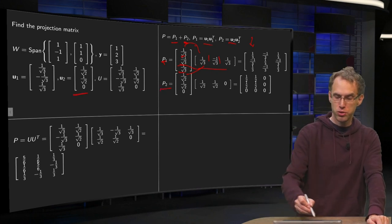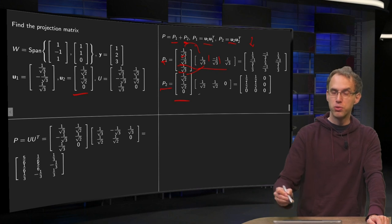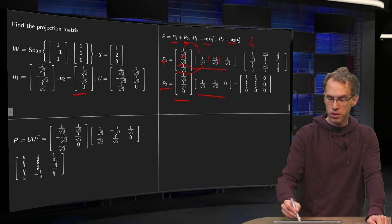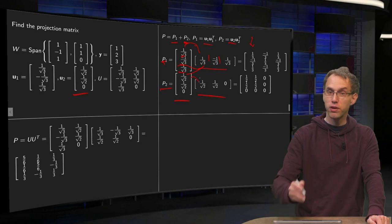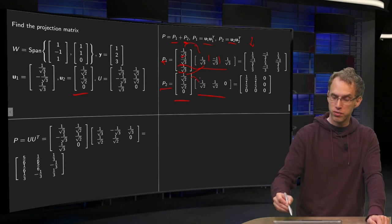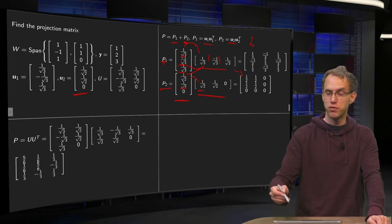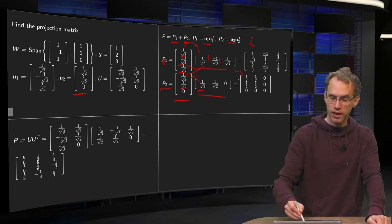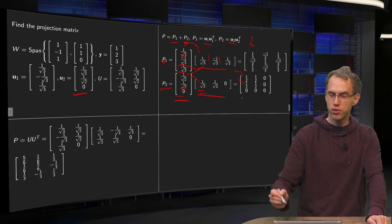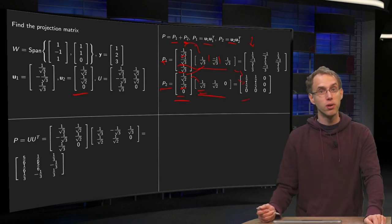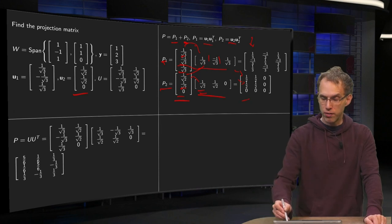Similarly for P2, but now you use u2. Here you have your u2 and your u2 transpose, and again we use the row-column rule. The product 1 over √2 times 1 over √2 gives you 1/2. Another product 1 over √2 times 1 over √2 gives you another 1/2, and then 0 times 1 over √2 gives you 0. You can do the second and third columns yourself. So there you have P1 and P2.